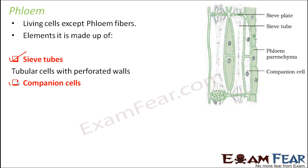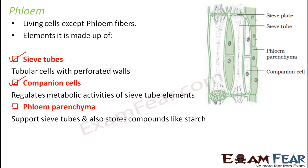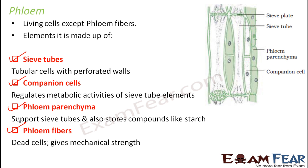Next are companion cells, which regulate the metabolic activities of sieve tube elements — sieve tubes are actually supported by companion cells. Then there is phloem parenchyma, again used for storage of food. Parenchyma cells — whether xylem parenchyma or phloem parenchyma — help in food storage, while the fibers provide mechanical support, just as xylem fibers do for xylem. The actual job of conduction in phloem is performed by sieve tubes along with companion cells.